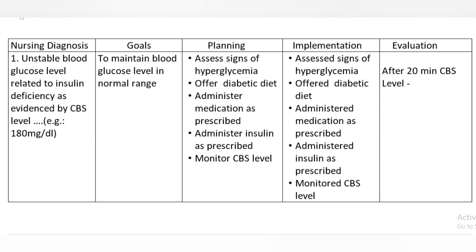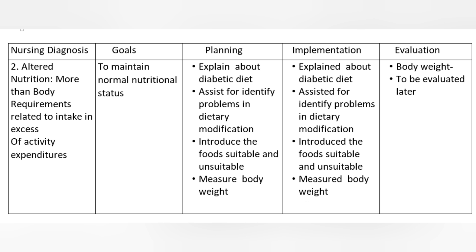Nursing Diagnosis 1: Unstable blood glucose level, related to insulin deficiency, as evidenced by CBS level of 180 mg/dL. Goal: to maintain blood glucose level in normal range. Planning and Implementation: assess signs of hyperglycemia, offer diabetic diet, administer medication as prescribed, administer insulin as prescribed, monitor CBS level. Evaluation: after 20 minutes, CBS level to be evaluated.